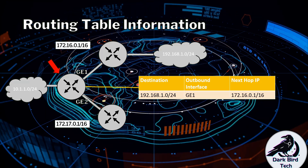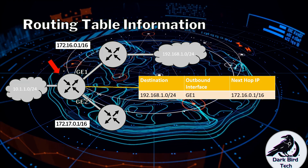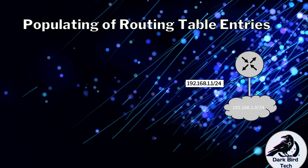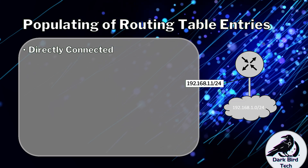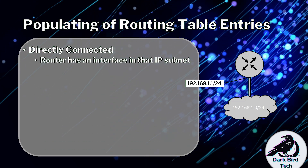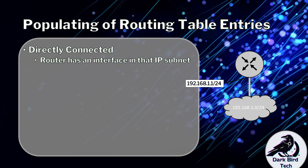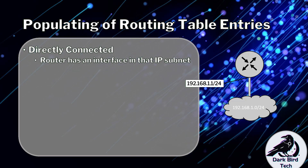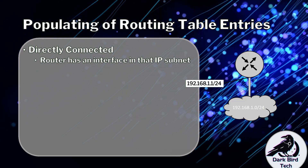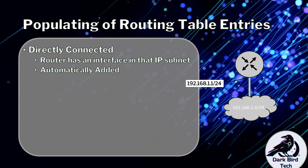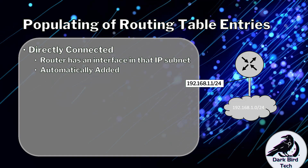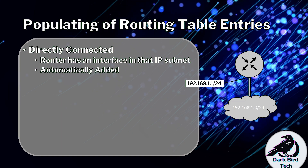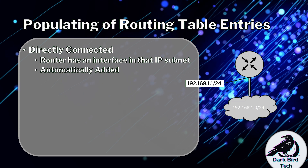That information would successfully allow this router to forward a packet to that network. In terms of how we get routing table entries, there are three main methods. The first is the destination network is directly connected, meaning the router currently has an interface in that IP subnet. Because that router has a direct connection to that subnet, it will automatically add that subnet to its routing table. Directly connected routes take preference over all other methods and have a cost of zero.